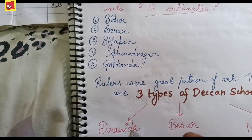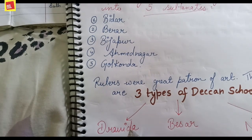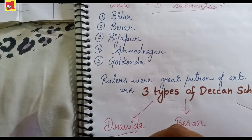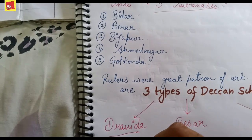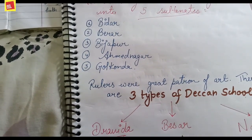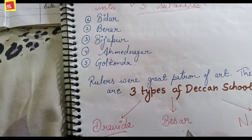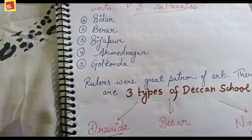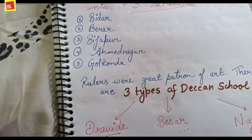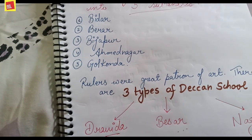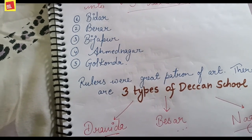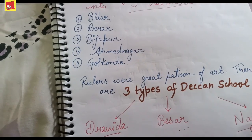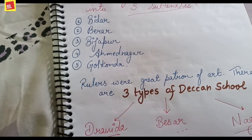The first type is Dravida, which originated and developed in South India. In the Dravida technique, mainly the art of sculpture came into dominance — such as Nataraja and Vataraja sculptures. The second is Vesara, about which not much has been found. The third is Nagara, also known as the Aryavarta style, which spread all over India. According to some manuscripts, both writing and painting were important in the Nagara technique.